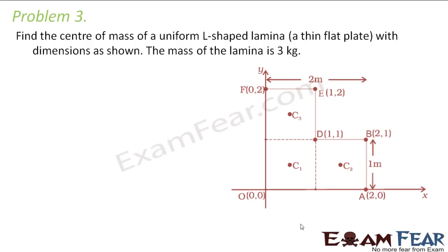Let us now look at the third problem. It says: find the center of mass of a uniform L-shaped lamina with dimensions as shown. The mass of the lamina is 3 kg. This L-shaped lamina actually consists of three squares — 1, 2, and 3 — which together form the lamina. The center of mass of each square lies at their geometric centers because it is a uniform lamina with uniform mass distribution. So for these squares, C1, C2, and C3 are their centers, and therefore their centers of mass are located at C1, C2, and C3.